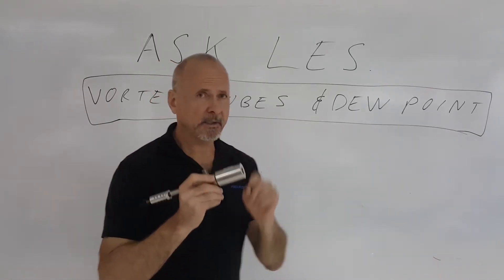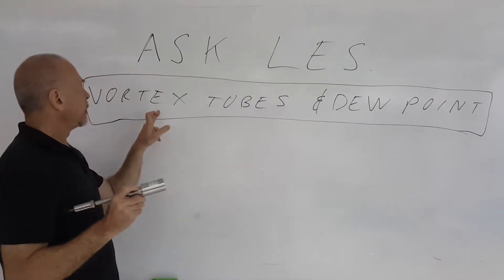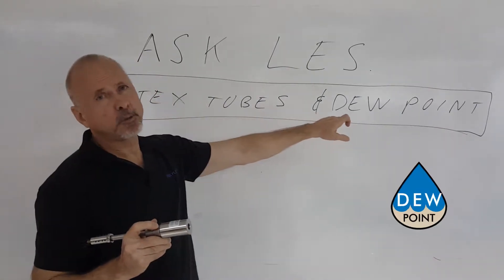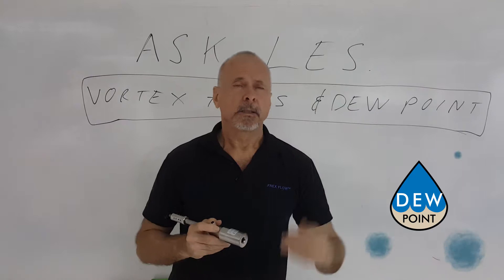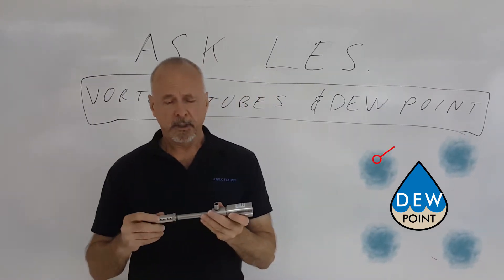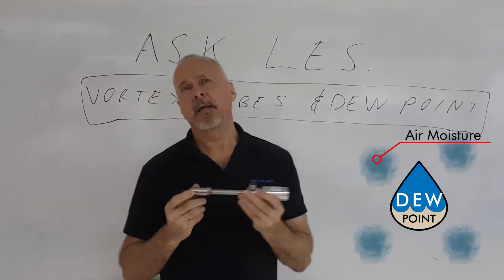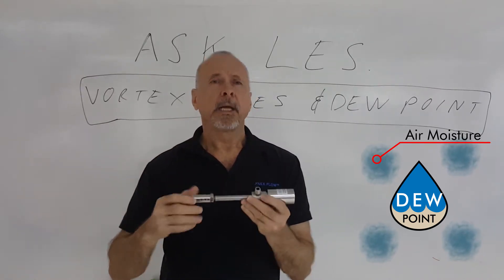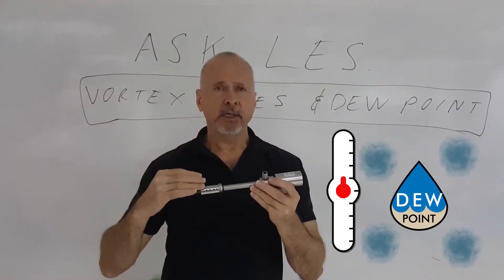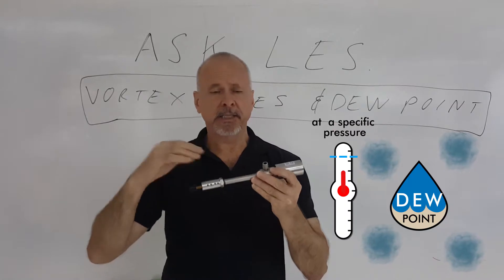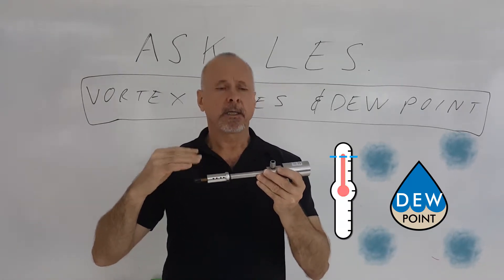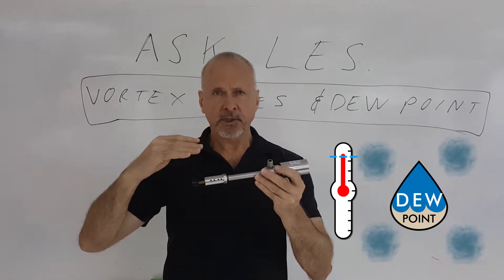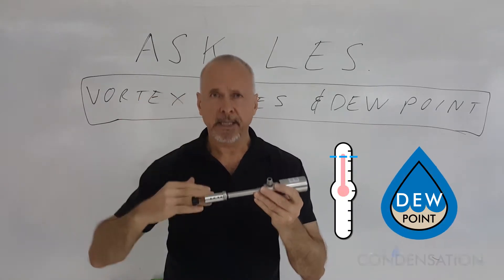Well, here's the situation: vortex tubes and dew point. The dew point of a compressed air line or the compressed air supply is the temperature at which, at that pressure, the moisture in the compressed air will condense out.